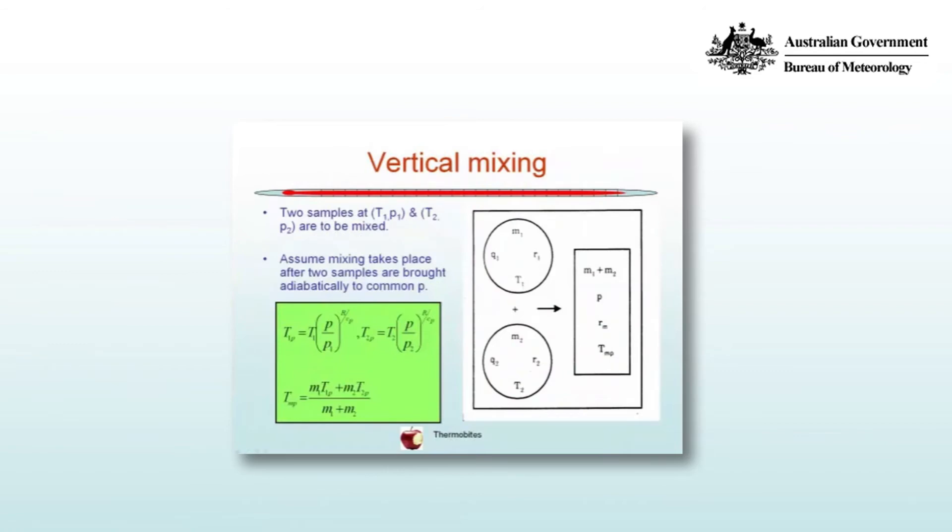So consider two samples of air. You've got R1 at a pressure P1 aloft with a mass M1, mixing ratio R1, temperature T1 and specific humidity Q1, and lower down at a pressure P2 a mass M2, Q2, R2 and T2, and they are going to mix together at an intermediate pressure level.